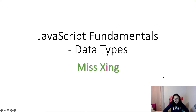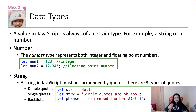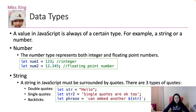Good evening. In this video, I will talk about data types which exist inside JavaScript. There are eight data types in JavaScript. Every time we assign a value to a variable, the value will always have a certain type, either a string or a number or other types.